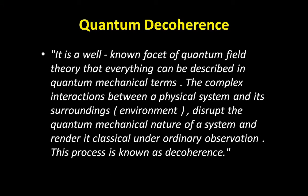The complex interactions between a physical system and its surroundings — the environment, which we refer to as the macro world — disrupt the quantum mechanical nature of a system and render it classical under ordinary observation, meaning observation by us.